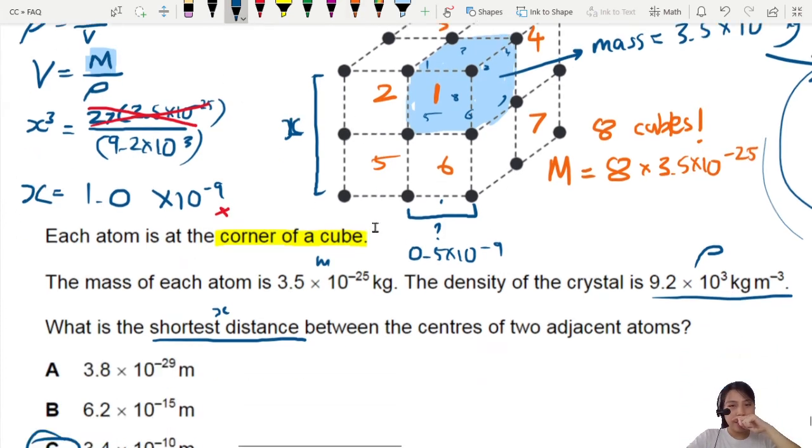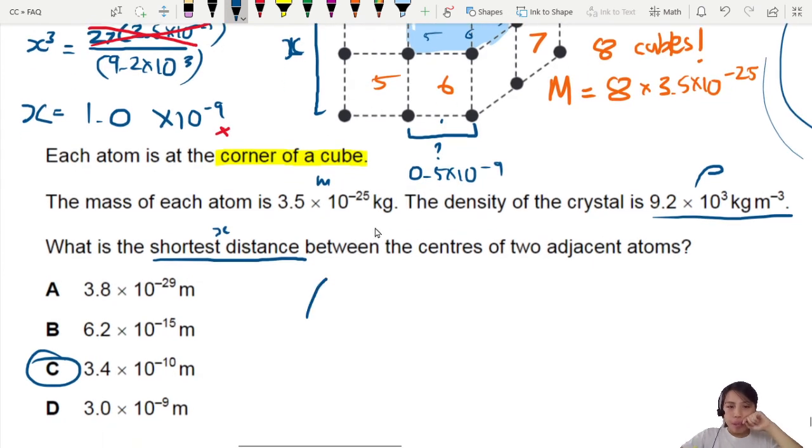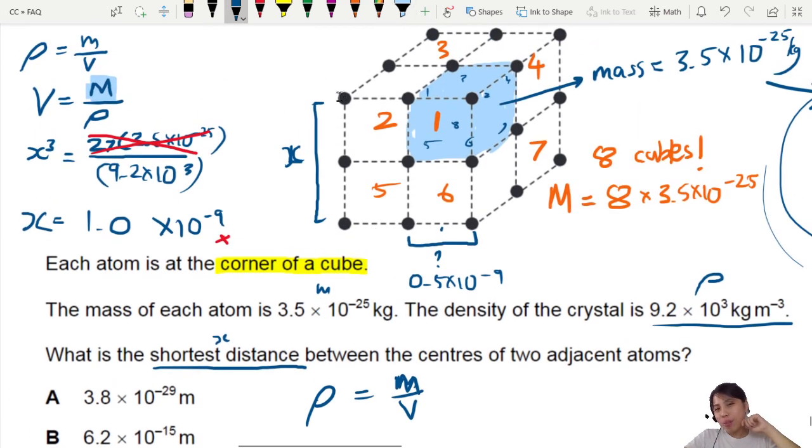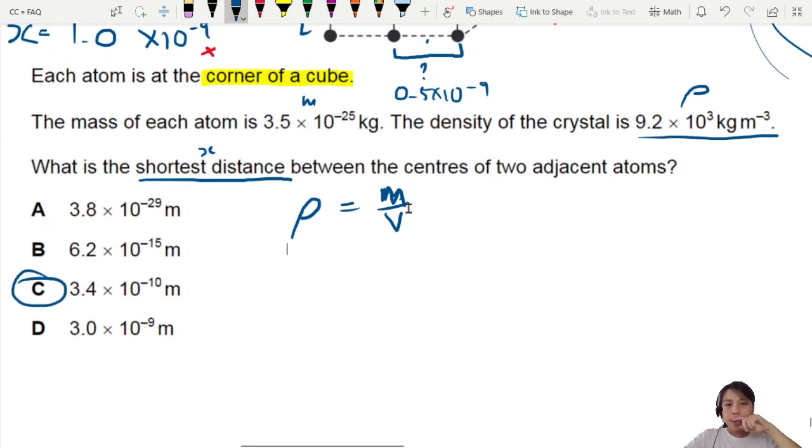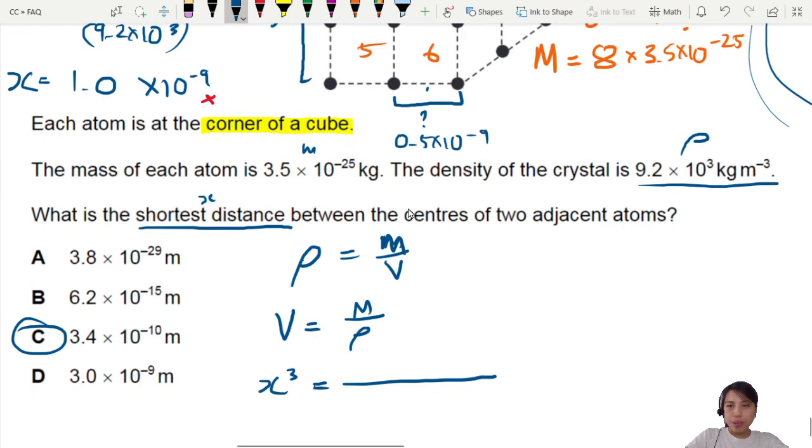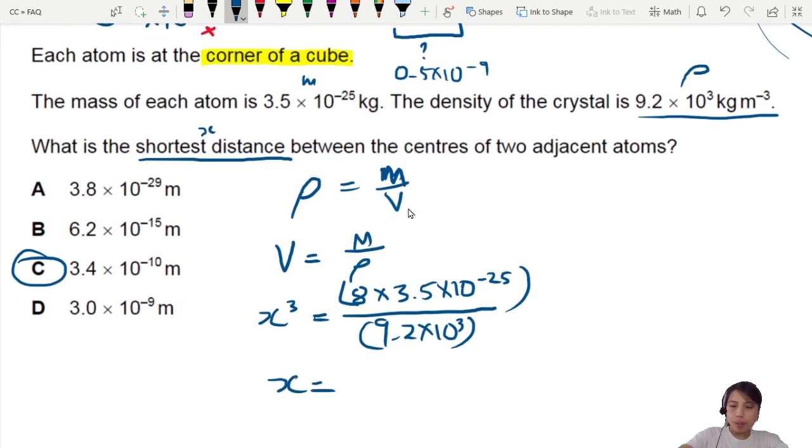So now, density equals mass over volume. But we know not all the mass is counted because some of it is outside of the cube. So volume equals mass over density. Volume will be x cube equals down the mass, 8 times. So let's write it down. 8 times 3.5 times 10 negative 25, divided by density 9.2 times 10 to the 3. And you get an x of about 6.73 times 10 to the negative 10.